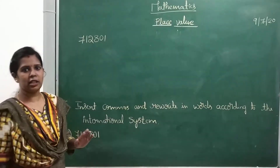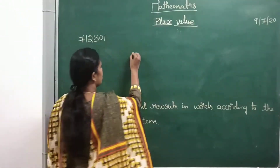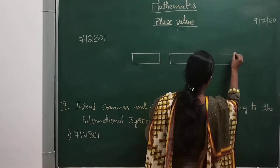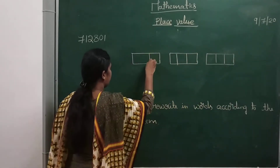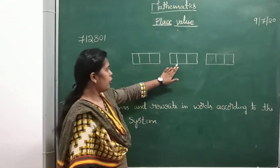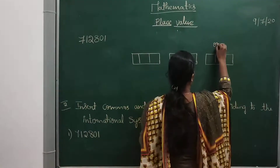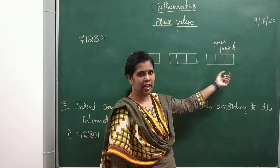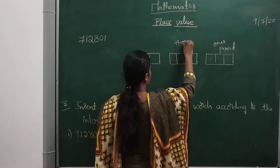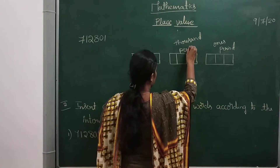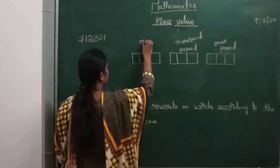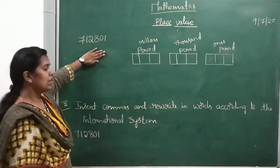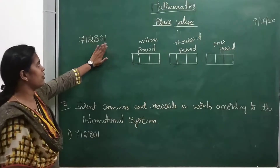In the international system, we make groups of three digits — three-digit rooms. Already I have explained this. So I have built a home of three-digit rooms and will give each a name. This is the ones period. In the Indian system also, the first period is the ones period. Next we have the thousands period. And next I have the millions period.